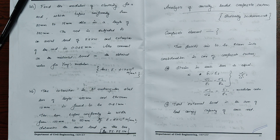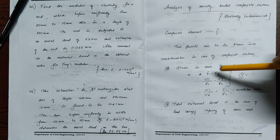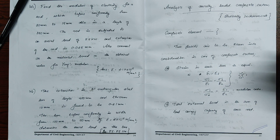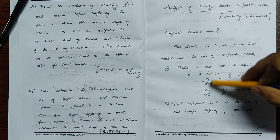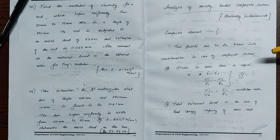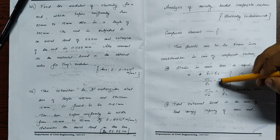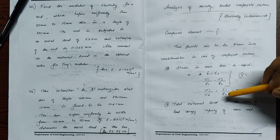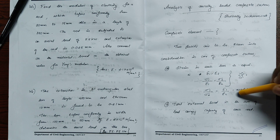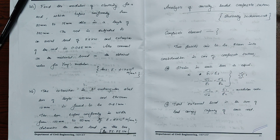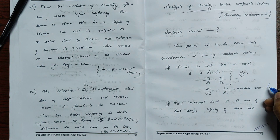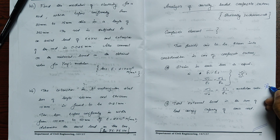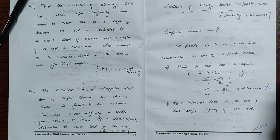The strain in each bar is equal. Epsilon can be written as stress divided by modulus of elasticity, that is sigma 1 divided by E1, sigma 2 divided by E2. From that, we can write sigma 1 divided by sigma 2 equals E1 by E2. This ratio of modulus of elasticity of the two materials is known as the modular ratio.